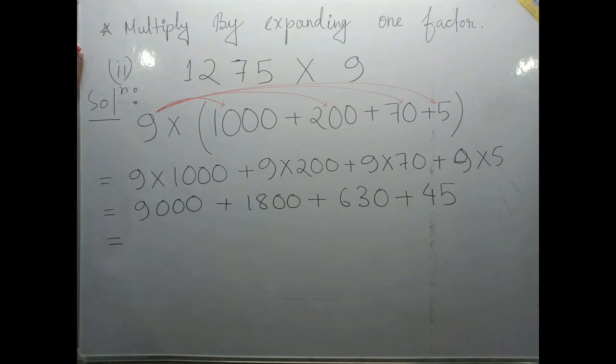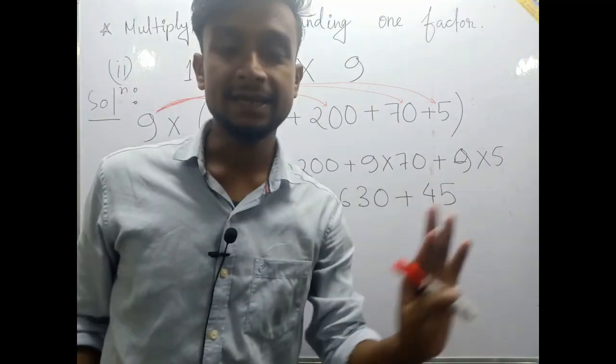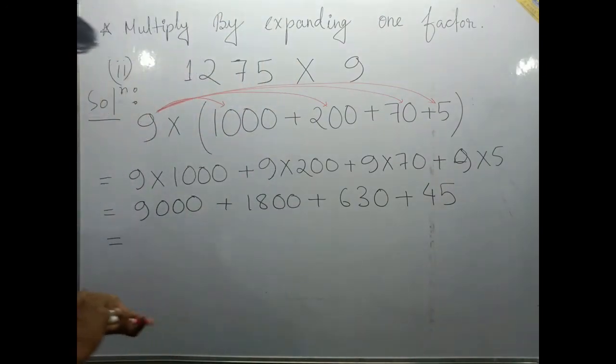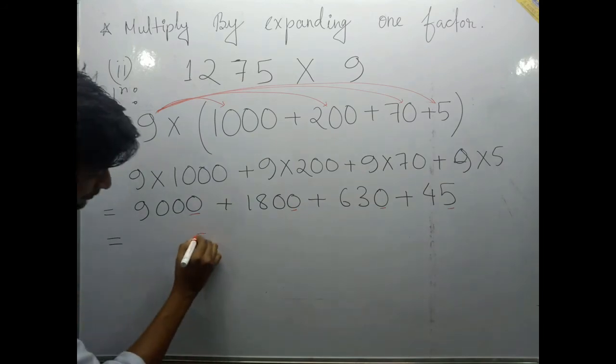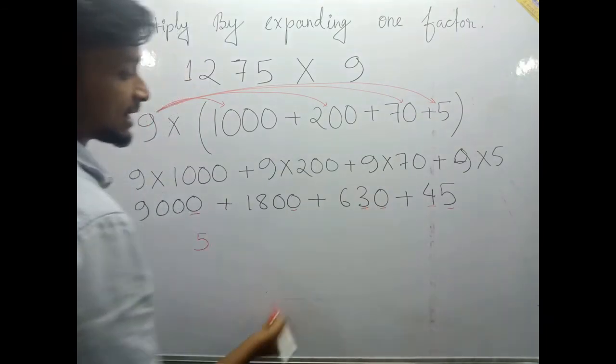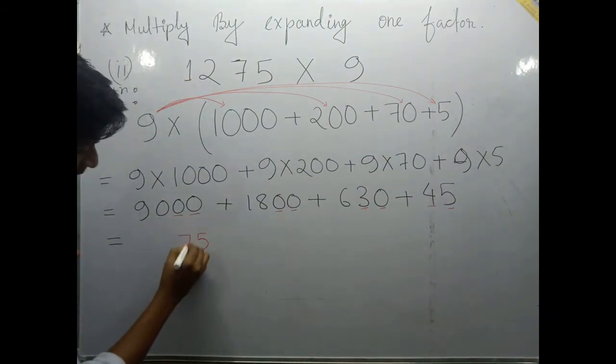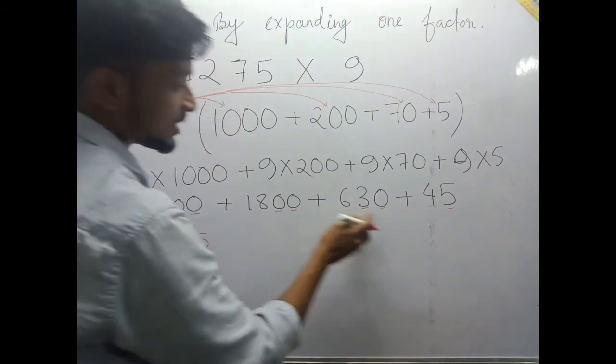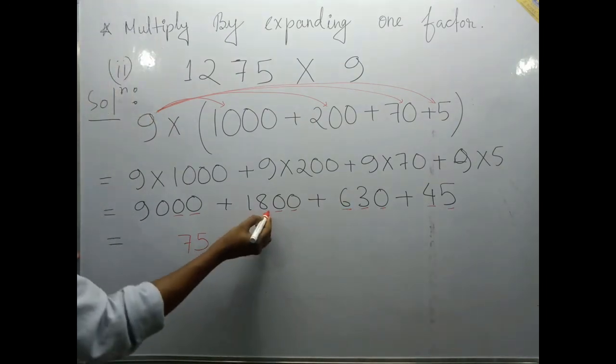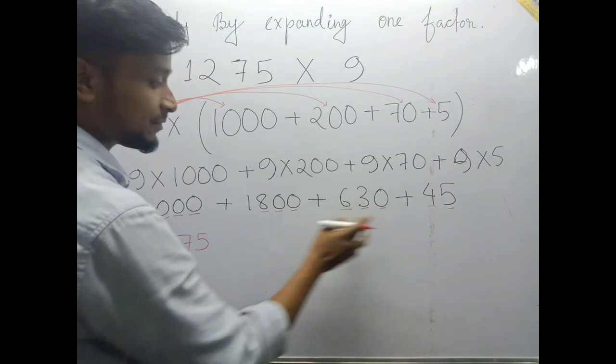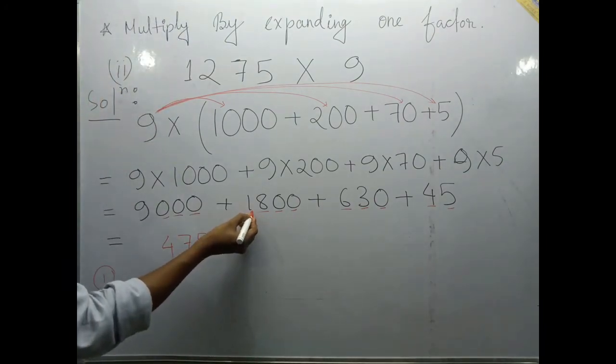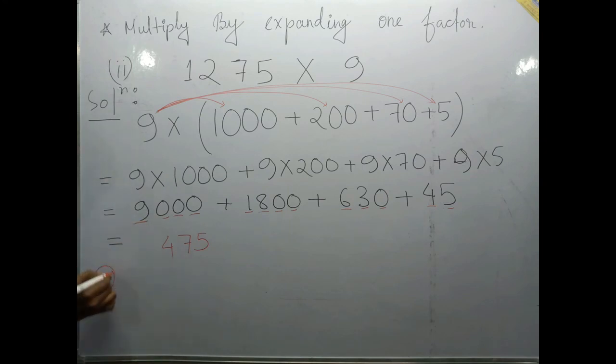Now we have to just add these 4 numbers. We will add them first checking each place. 1s place: 5 plus 5 is 10, carry 1. 10s place: 4 plus 3 is 7. 100s place: 6 plus 8 is 14, carry 1. 1000s place: 1 plus 9 is 10, which gives us 11000. And our answer will be 11475.